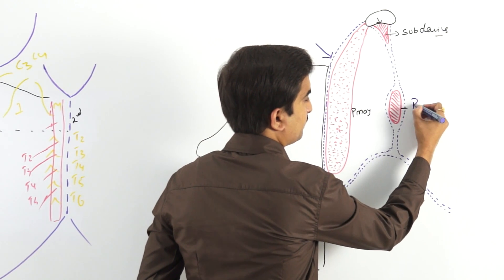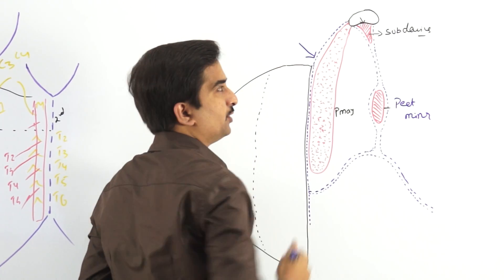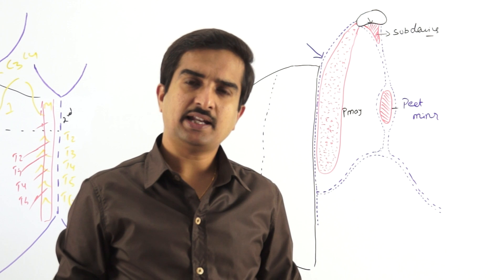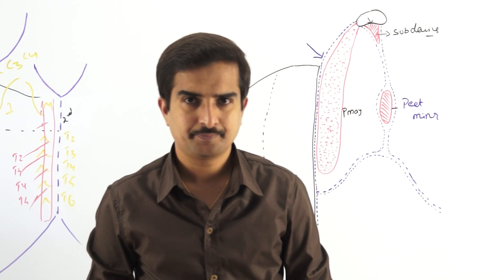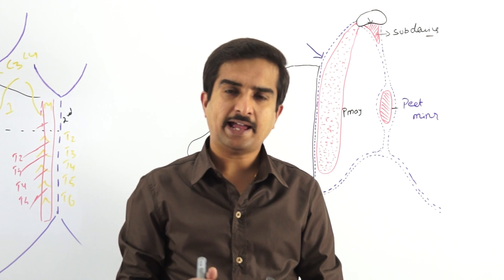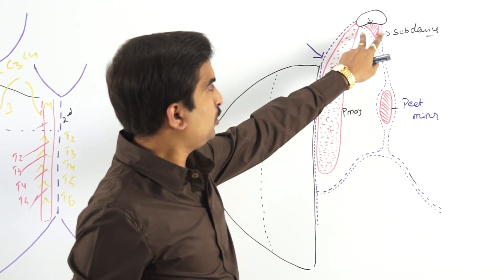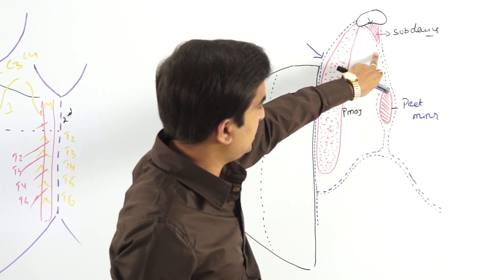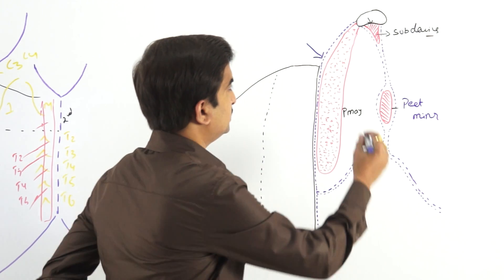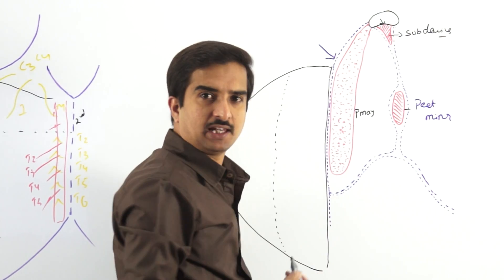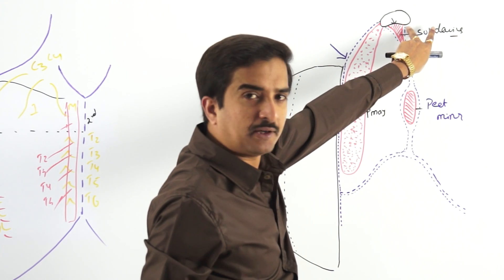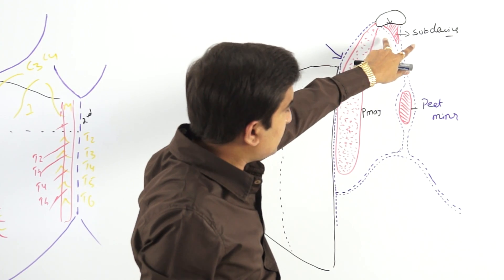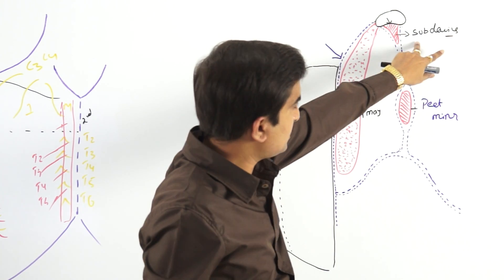Looking at deeper structures, you can see the pectoralis minor muscle, and above it the subclavius. At the clavicle, the lower surface has a longitudinal subclavian groove with two lips — an outer lip and an inner lip. Both the outer and inner lips of this longitudinal subclavian groove give attachment to the clavipectoral fascia. The outer and inner fibers of the clavipectoral fascia enclose the subclavius muscle.